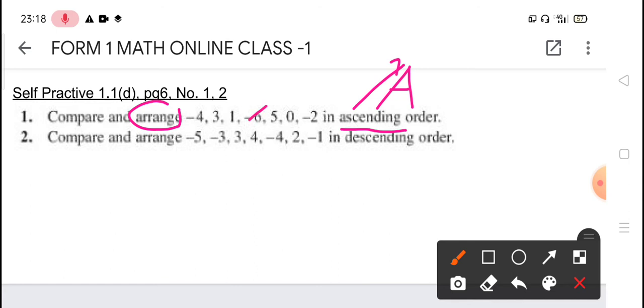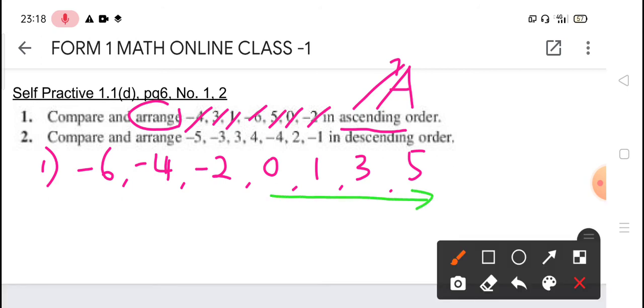So here the smallest will be negative 6. So question 1, we start from negative 6, follow with negative 4, and next we follow with negative 2. So after all the negative integer, we continue with 0, 1, 3, 5. So can you see? Start from 0, when you move to the right, the number getting bigger and bigger to show the bigger value. If you start from the 0, move to the left, the value will getting smaller and smaller, even though the number getting bigger because of the negative sign, opposite way.